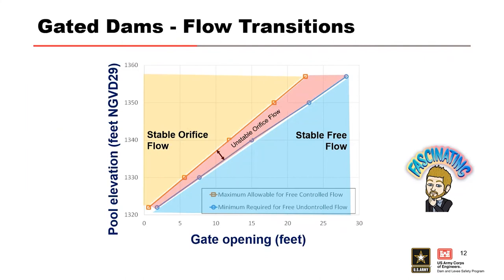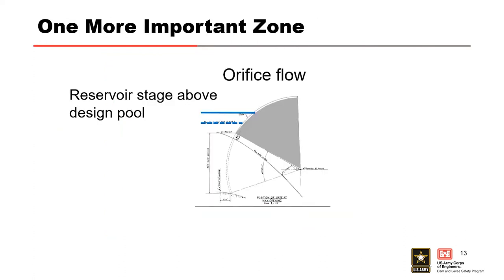During transitional orifice flow, discharge may surge and cause vibrations, which can damage the gates and the dam — we need to avoid operations in this range at all costs. A stable orifice flow condition occurs when there is enough water on the gate to maintain stable flow conditions. Sometimes we assume we need about a foot of water up on the gate to ensure we're capturing the nap profile with a conservative margin to stay out of the vibrating range.